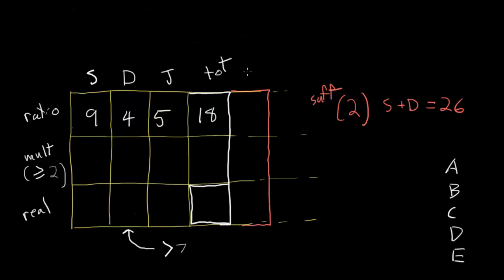If you want an illustration, we could use the chart like this. Let's add a new column, this one will be shirts plus dresses. We've got the real world value for shirts plus dresses, which is 26. And we know the ratio world value for S plus D, which is 9 plus 4, or 13.